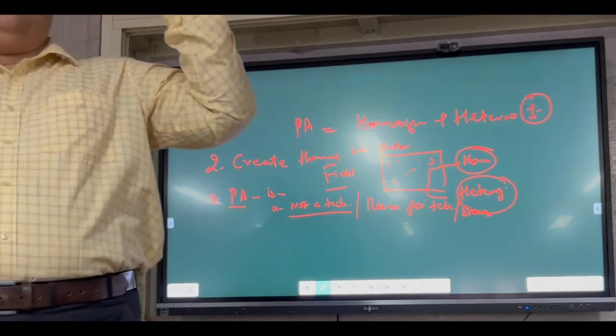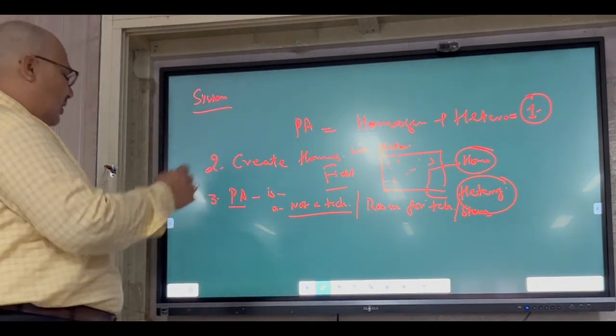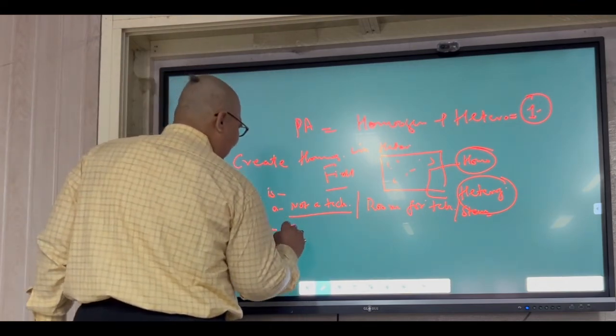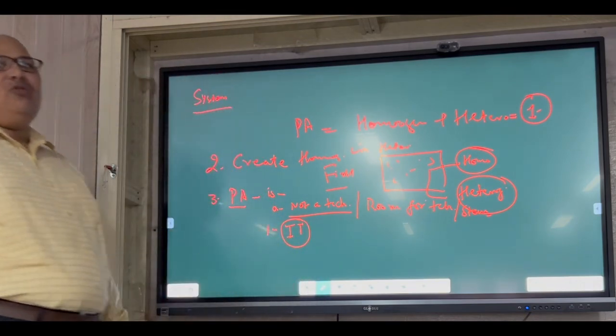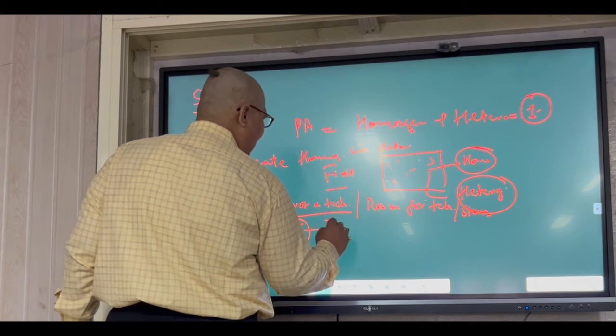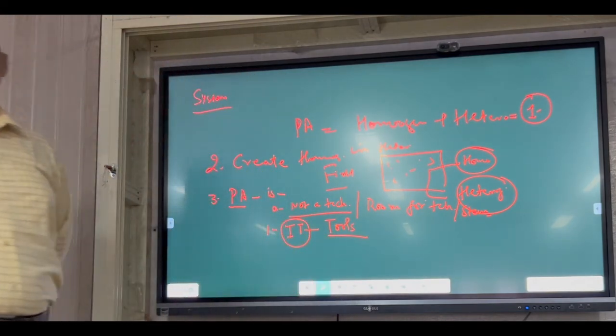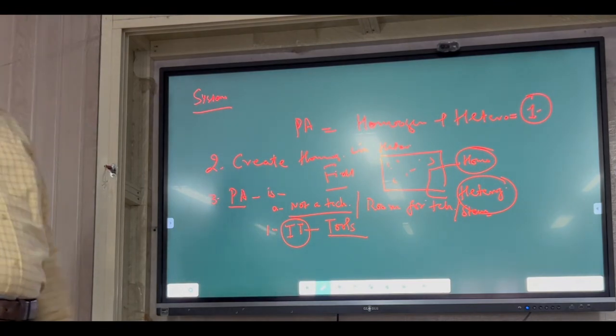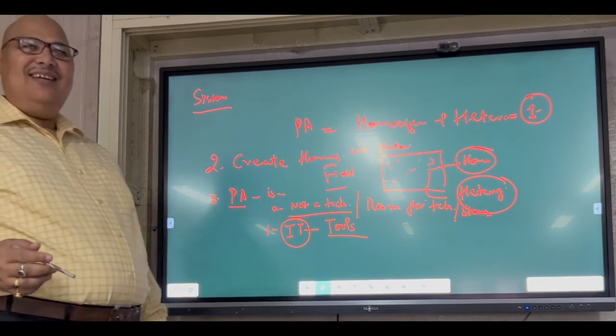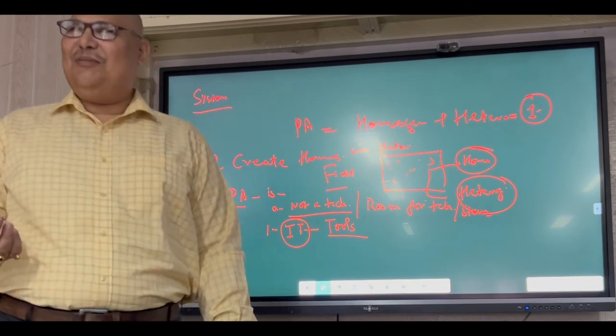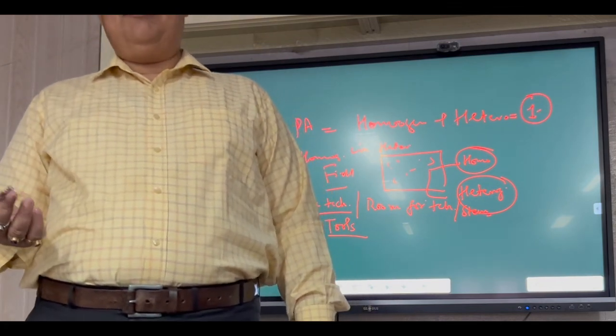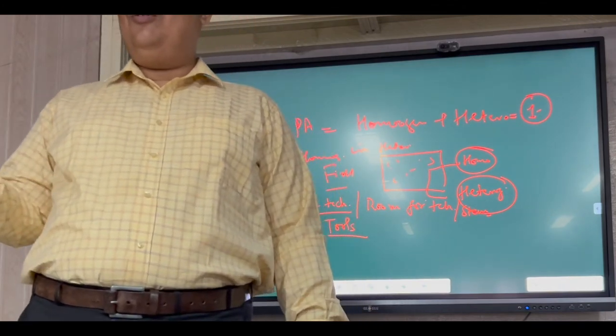Now the problem is why we need precision agriculture, we'll discuss that. Now which technologies are there? Information technology and whatever tool technologies there are, they come under the room of precision agriculture. I'll rest now. Today we'll end here. We'll continue this in next extra class. Any questions, any queries?